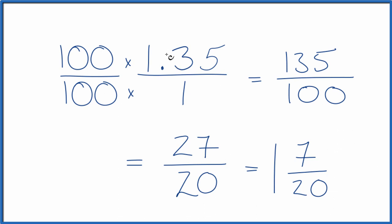Either way, when we convert the decimal 1.35 to a fraction, we get the simplified fraction 27 over 20, which we could write as a mixed number 1 and 7 over 20.